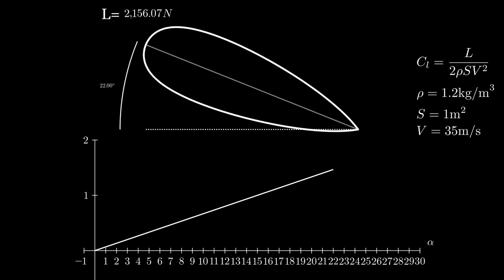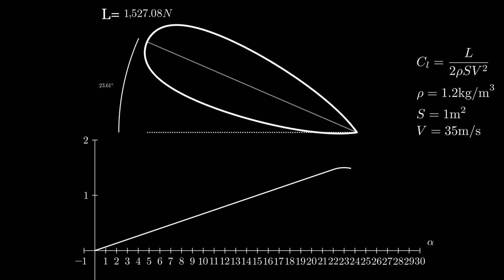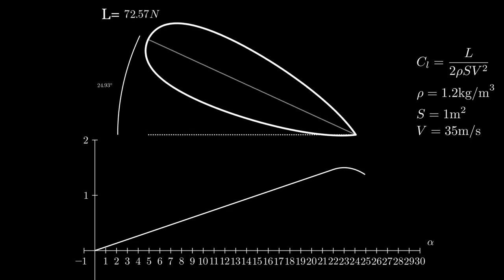Now, at 22 degrees, we have 2,156 newtons in the upwards direction, but as we continue along, we hit a max, and then it tapers off drastically, and we get zero lift. This is because we have induced stall.